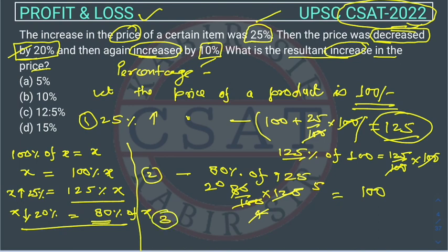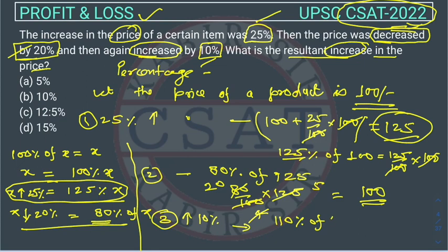And the third is, increase of 10%. So from this concept, what we can do? We can directly write 110, because 100% is that number. So there is an increase of 10%. So we can write 110% of what is the current price? Current price is 100. So it will be 110 upon 100 into 100. This 100 will cancel this 100. So what is the price? 110.